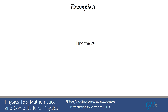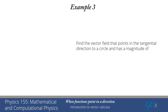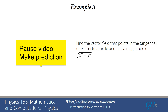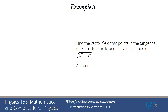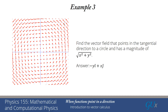We have one more example: find the vector field that points in the tangential direction to a circle and has a magnitude of √(x² + y²). This is also one we've seen before. It makes me feel like the axes are tilted by the way the arrows are drawn, but if you look carefully there's no tilting — it's just an optical illusion. Here we have that kind of rotating field, and the rotation gets stronger and stronger the farther from the center we go.